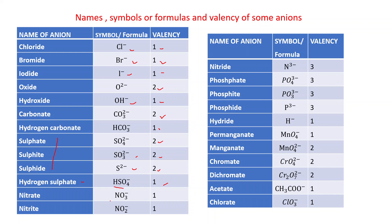Nitrate: NO3-, valency is 1. Nitrite: NO2-, valency is 1. Nitride: N3-, valency is 3. Remember the difference — nitrate is NO3-, nitrite is NO2-, and nitride is N3-. Phosphate: PO4 3-, valency is 3.